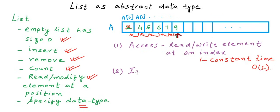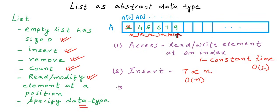Inserting an element at the end of the list takes constant time — O(1). But inserting at a particular position requires shifting elements toward higher indices. In the worst case, inserting at the first position requires shifting all elements, so insertion time is proportional to the length of the list n — that is, O(n). Similarly, removing an element is also O(n), since elements need to be shifted and the time taken is proportional to the current size of the list.